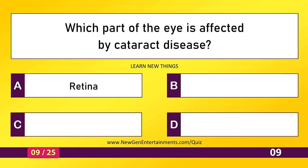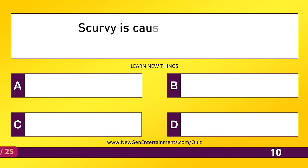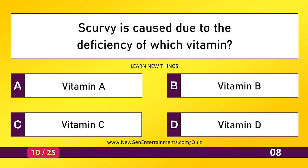Which part of the eye is affected by cataract disease? Lens. Scurvy is caused due to the deficiency of which vitamin? Vitamin C.